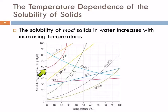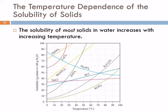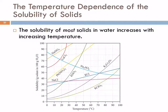The temperature dependence is different for all these different compounds. Some of them are linear, like sodium nitrate. Some of them are very curved, like calcium chloride. Sodium chloride is actually fairly flat — its solubility does not depend very strongly on temperature. And there are some things, like sodium sulfate, where as you increase the temperature, the solubility decreases. That's the exception rather than the rule, but it does happen.